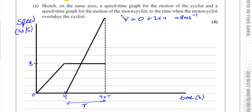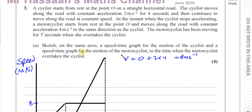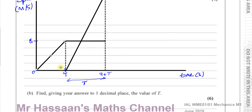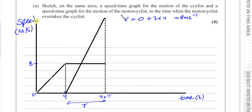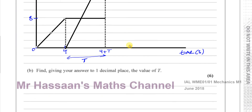After joining the lines together, the sketch is complete. We don't know the exact value of T yet, so we can't write down specific numbers for the motorcyclist's final speed, but we can see clearly: the motorcyclist's line must be steeper than the cyclist's; it starts from zero when the cyclist stops accelerating; and at time four plus T seconds, the motorcyclist overtakes the cyclist. That completes part A.